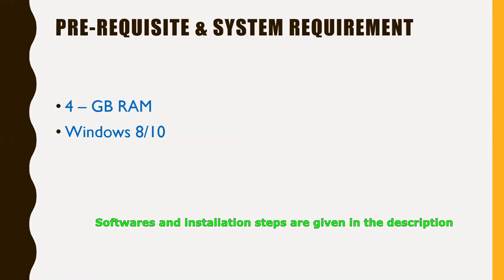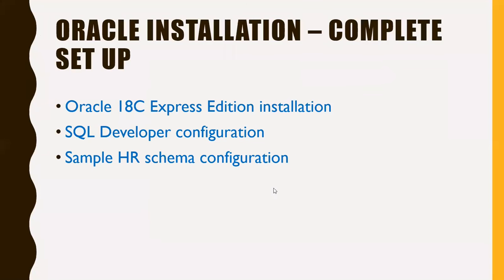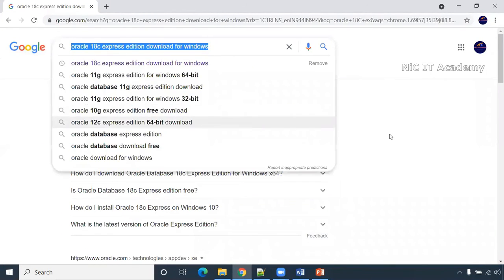The prerequisite for this installation is that we need 4 GB of RAM and Windows 8 or 10 OS. First, we are going to download the Express Edition. Type 'Oracle 18c Express Edition download for Windows' in your browser.